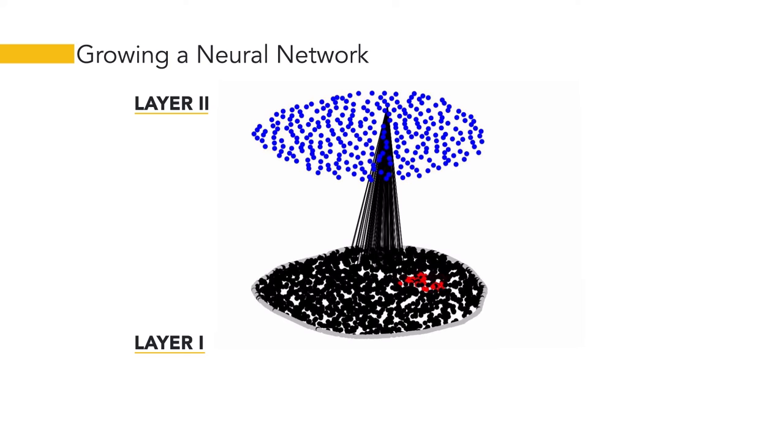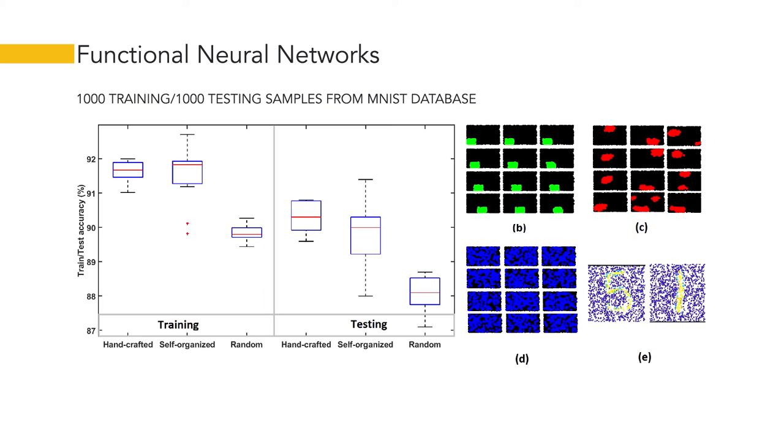We also demonstrated that networks grown and self-organized from a single cell are functional and can be used to perform conventional machine learning tasks like image classification. Networks grown from a single unit perform as well as handcrafted ones.